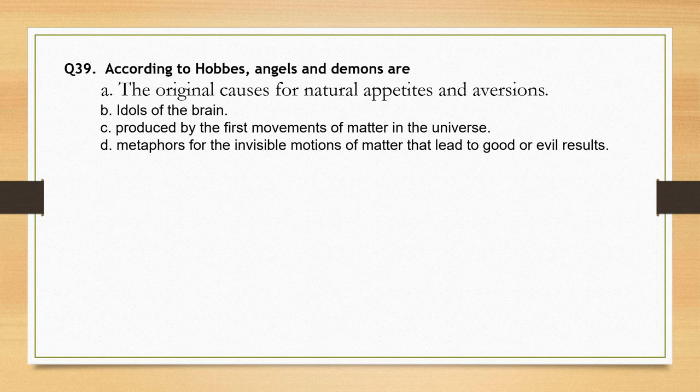According to Hobbes, angels and demons are — options: idols of the brain produced by the first movements of matter in the universe; metaphors for the invisible motions of matter that lead to good or evil results. The correct option is option B: idols of the brain.